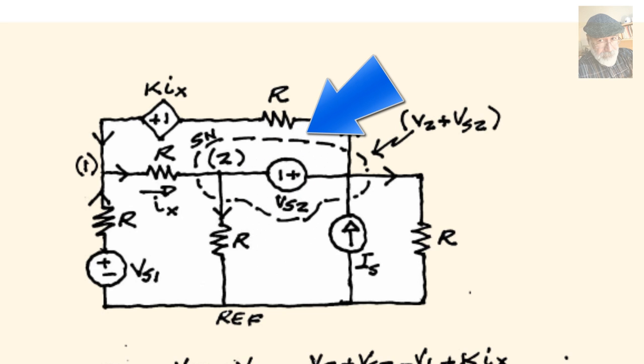The supernode has been highlighted with that Gauss surface. Because the voltage here is the variable V2, the voltage on the far side of the voltage source is not a new unknown, that's the supernode concept. It is V2 plus the value of the source VS2. That is the voltage here on this node on the side.